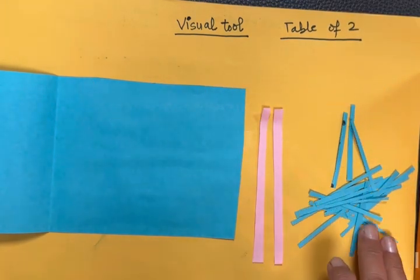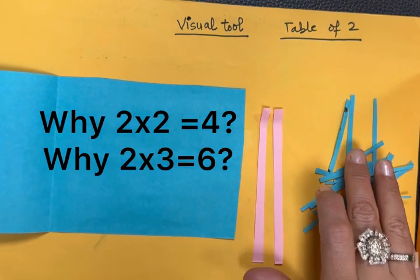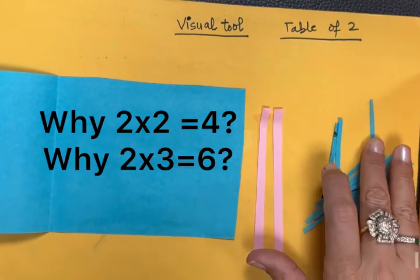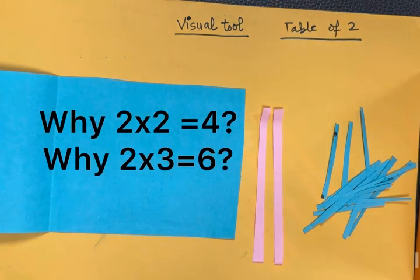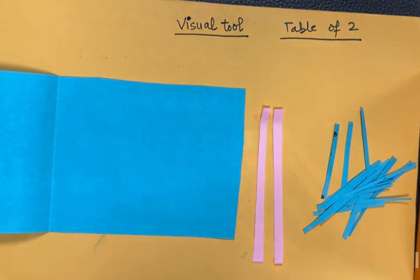Children find difficulty in understanding why 2 times 2 is 4 or why 2 times 3 is 6. Teachers can use this tool for helping children visualize the table.